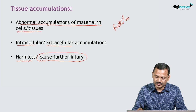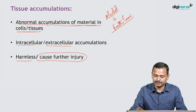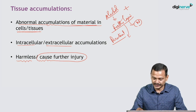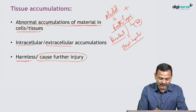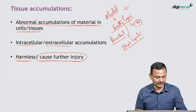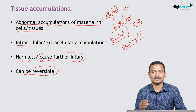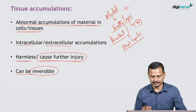Take fatty liver as an example. Alcohol causes fatty liver. If the person stops drinking, the fatty liver will go back to normal. But if it is persistent or the person continues to drink alcohol, then this fatty liver — steatosis — may progress to steatohepatitis. So it can be harmless or it can cause further injury. Some deposits are reversible and some are not, and fatty liver is reversible to some extent.